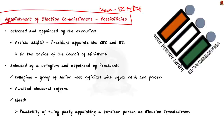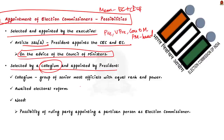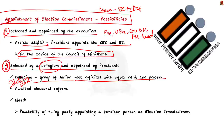For the appointment of members of ECI, two options are available. Option one: members to be selected by the executive — as it is happening now — where the president appoints the Chief Election Commissioner and Election Commissioners on the advice of the council of ministers, as per Article 324, Clause 2. Option two: members can be selected by a collegium — like in the case of judicial appointments to the Supreme Court and High Courts — which is basically a selection panel consisting of a group of senior-most officials of equal rank and power.